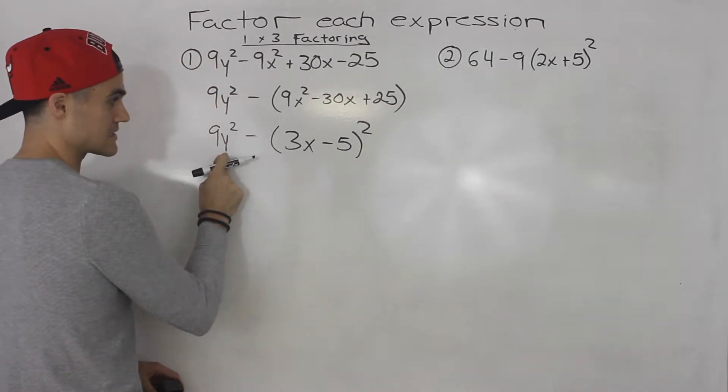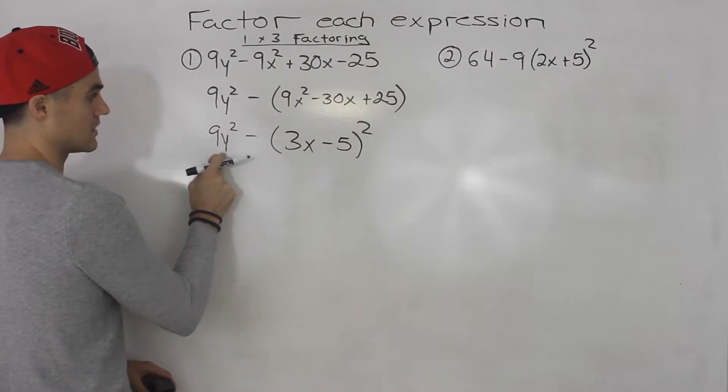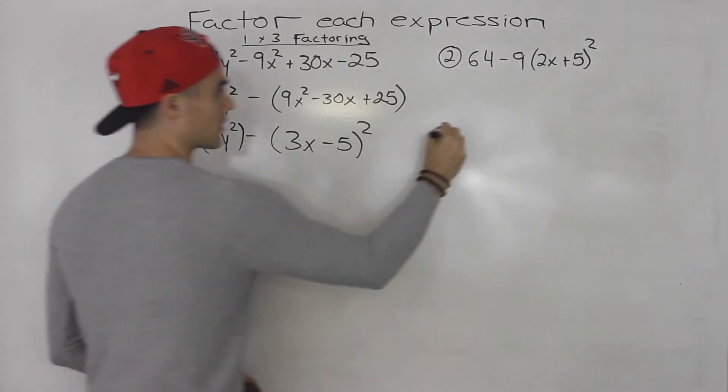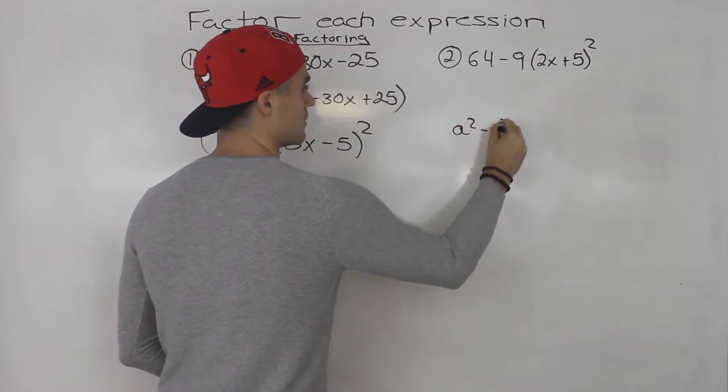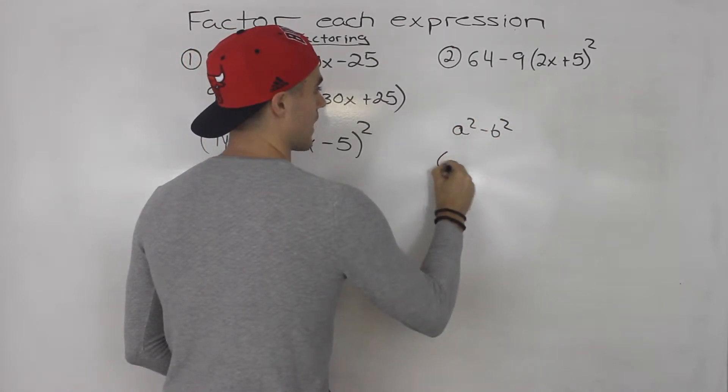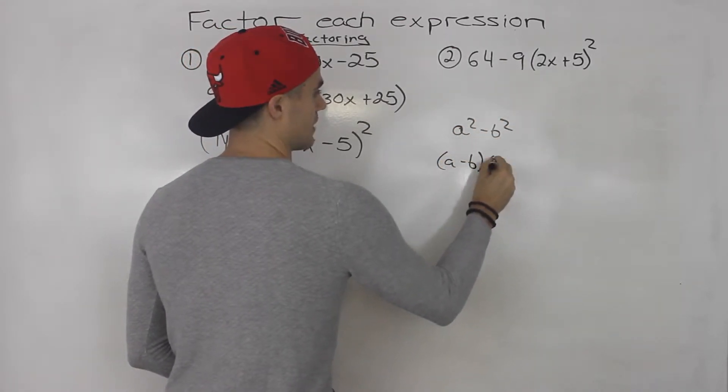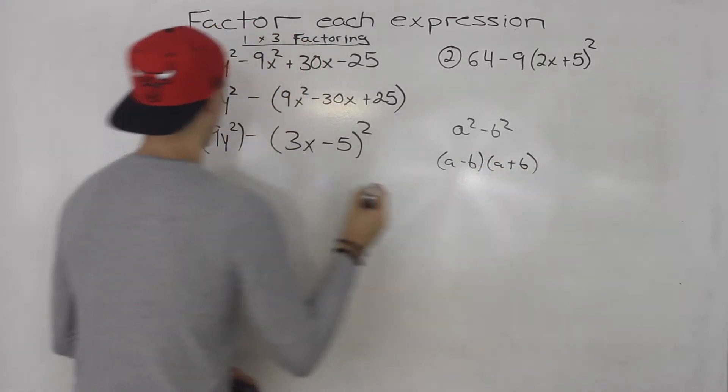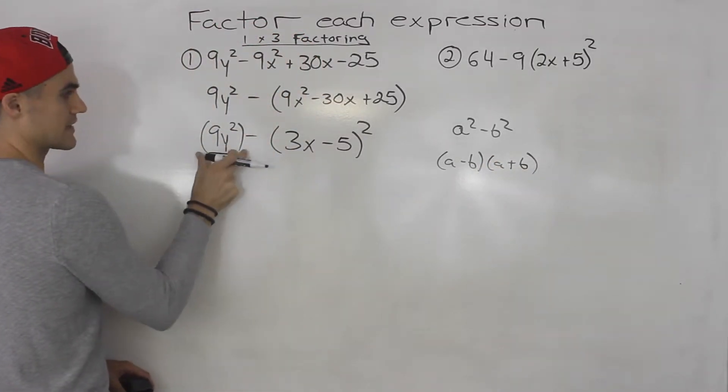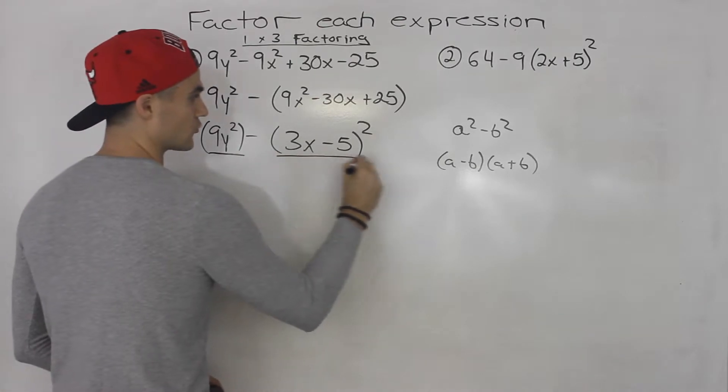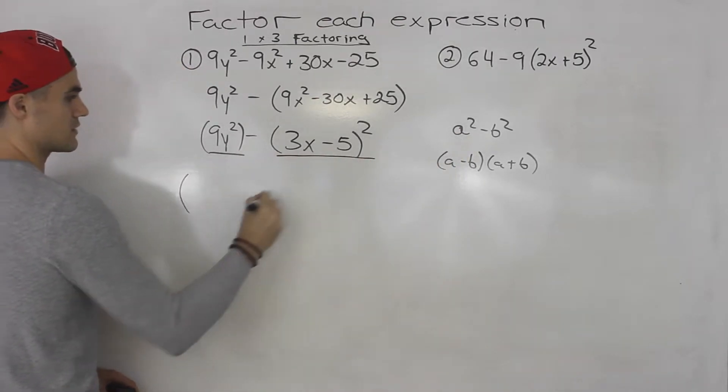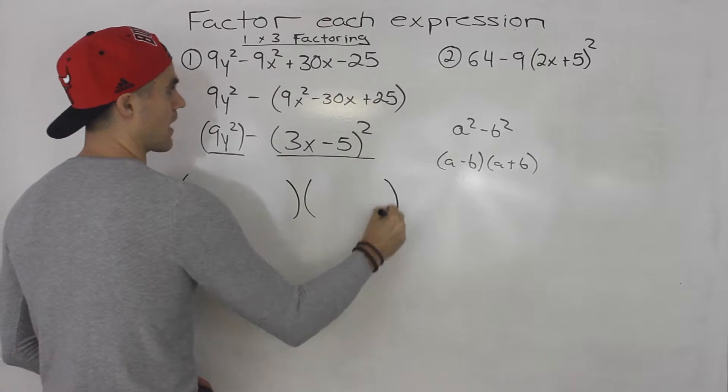And then from here, notice how this is a difference of squares. This is like, if you remember, a² minus b² is equal to a minus b, a plus b. Well, this whole term here is like the a squared, and then this whole term here is like the b squared. So it's going to factor into two brackets.